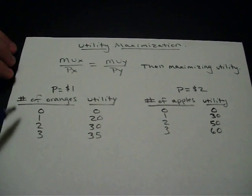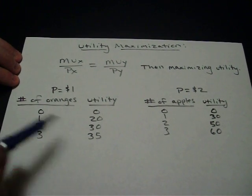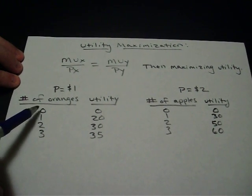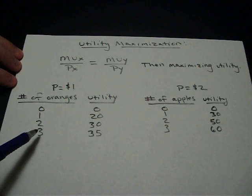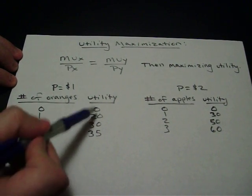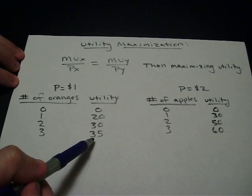Let me give you an example. Let's compare apples and oranges for this example. You've got a number of oranges: 0, 1, 2, 3. That's how many the consumer is purchasing, and then their total utility from purchasing that product.